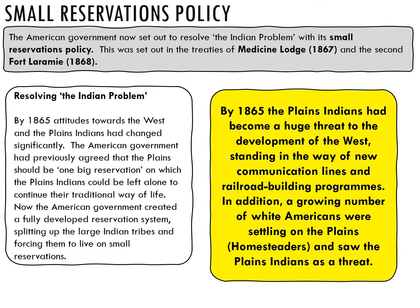We have treaties which have been unsuccessful to a certain degree in the past, and you have two in front of you. On the left, resolving the Indian problem by 1865 — end of the Civil War. We have that change in attitude towards the West, as well as attitude changes towards the Indians. The American government previously agreed that the Plains should be one big reservation so that the Indians could be left alone to follow their traditional way of life.